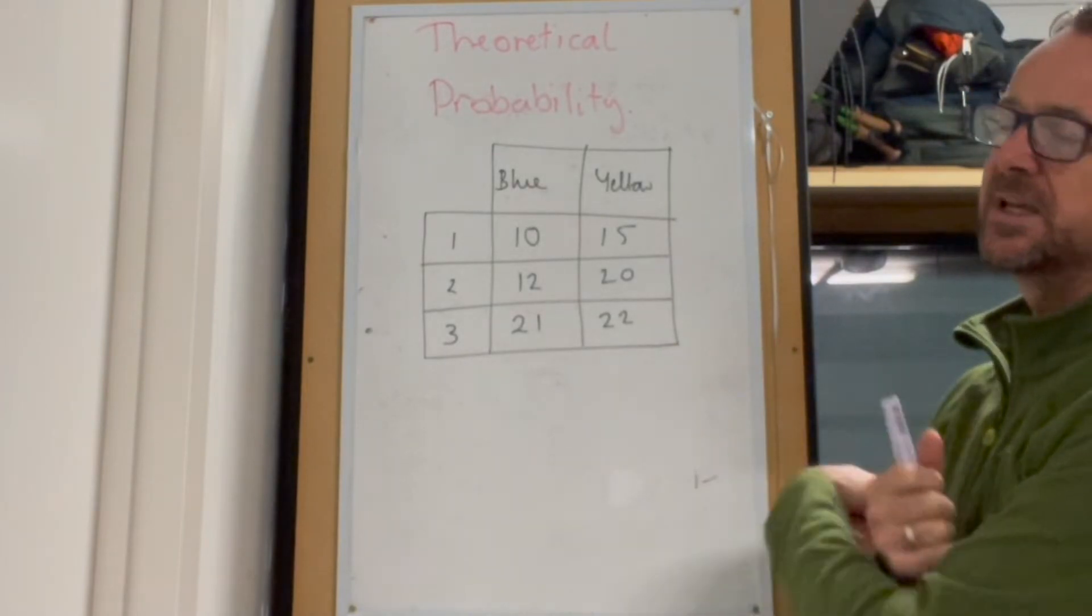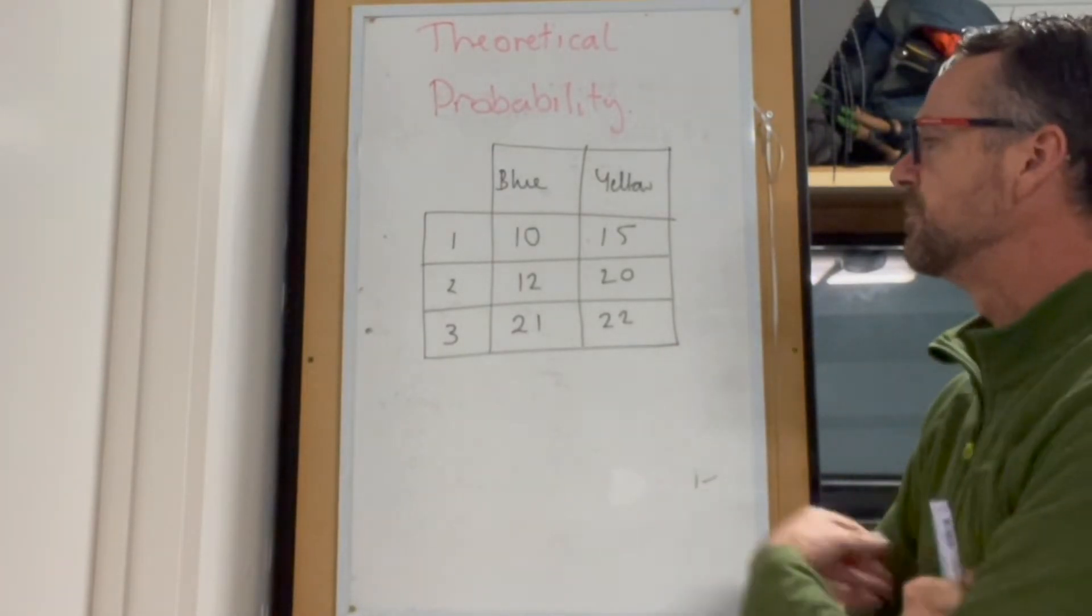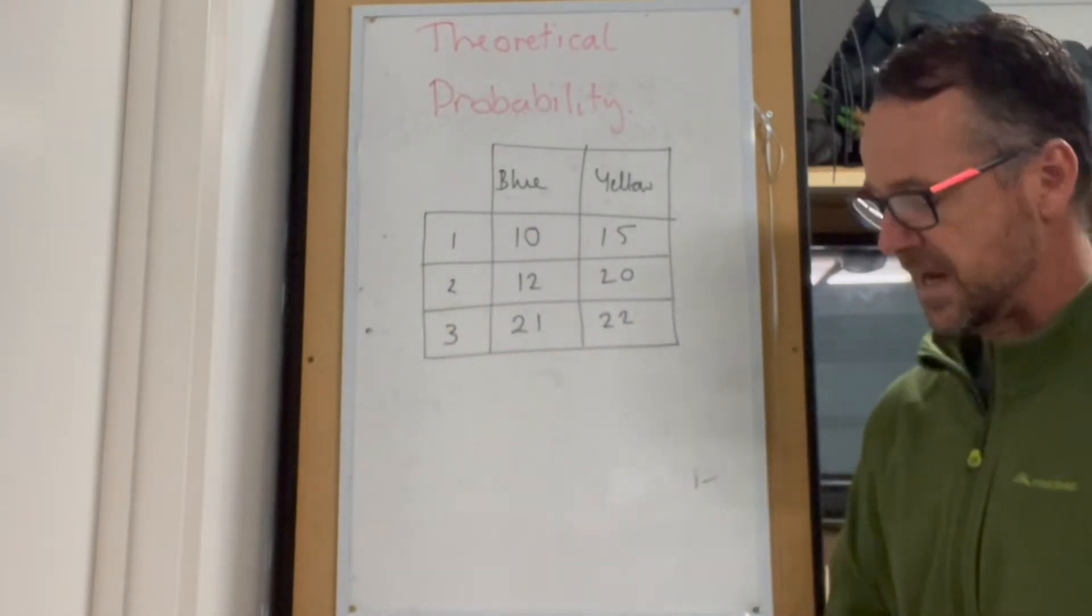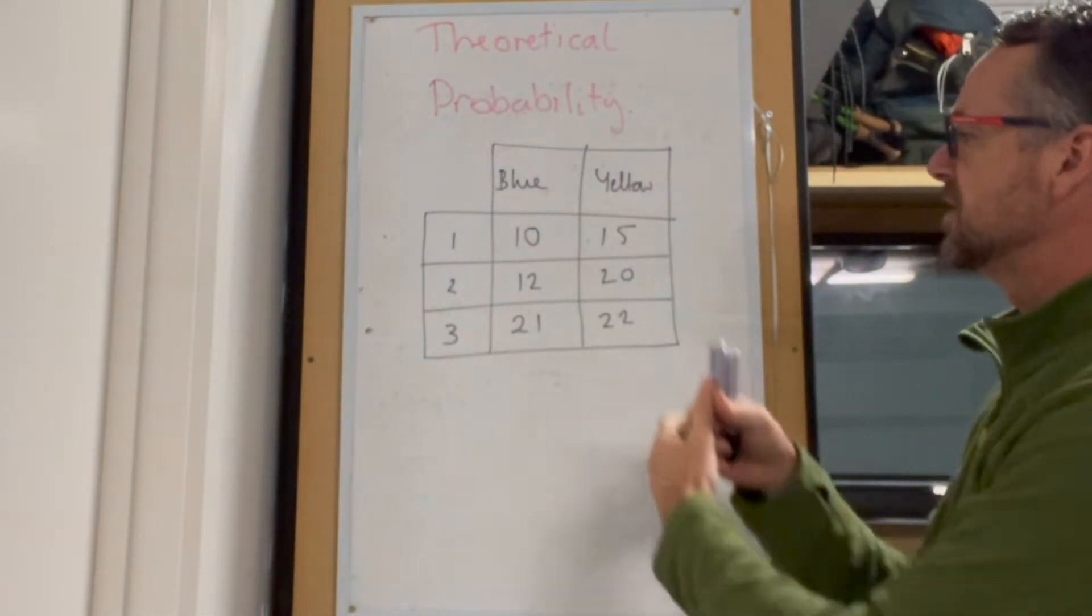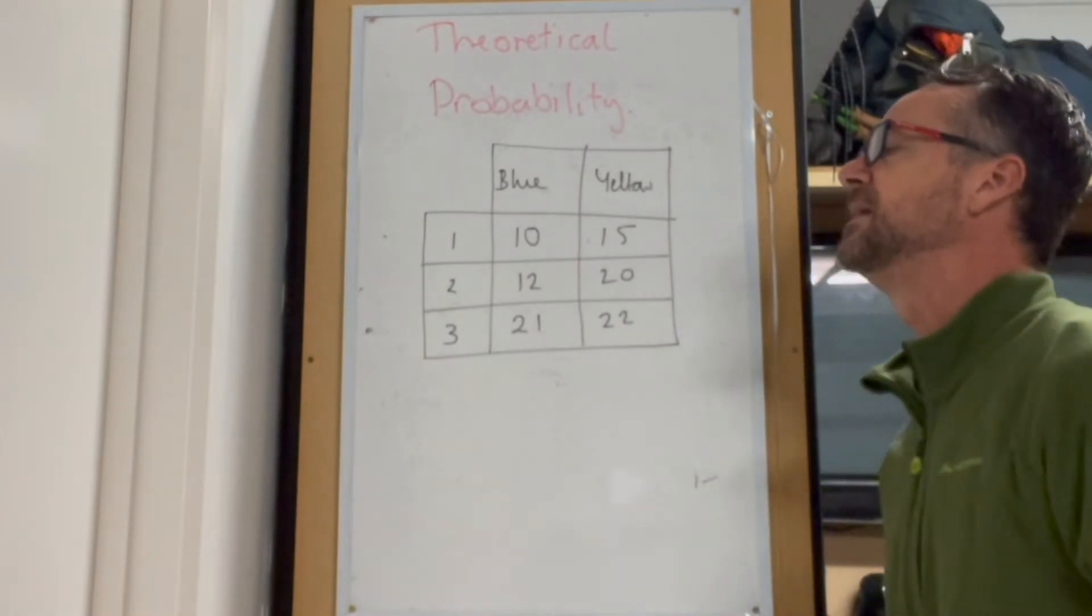So let's have a look at an example here where we've got blue and yellow counters, and each of the blue and yellow counters has a number one, two, or three on the back of it. And so that information is put in this table. So we can look at this and go, what information are we given here?